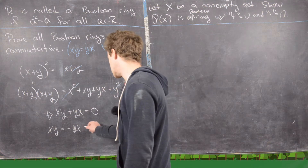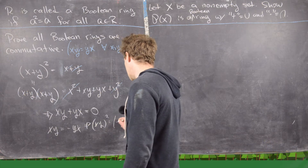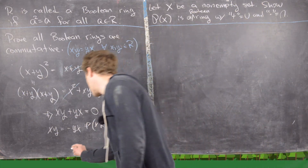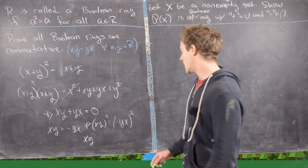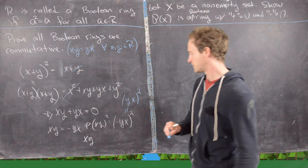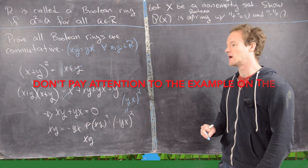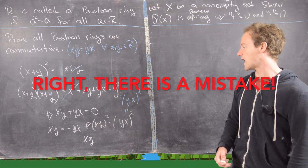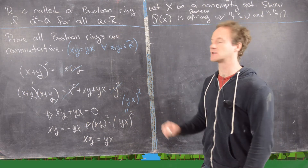Squaring both sides of xy equals negative yx gives xy squared equals negative yx squared. In a Boolean ring, xy squared equals xy, and negative yx squared equals yx squared equals yx (since squaring a negated element gives the same as squaring the positive — similar to the first lemma). So we have xy equals yx, which is the commutativity condition.